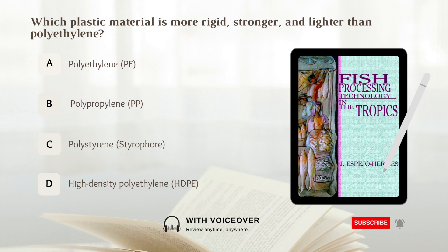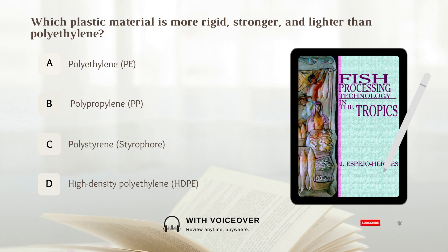Which plastic material is more rigid, stronger, and lighter than polyethylene?